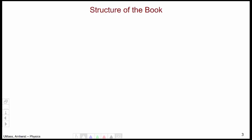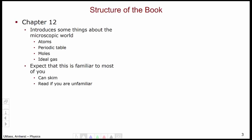So what is the structure of the book for this particular unit? The first chapter in this unit is chapter 12. Chapter 12 introduces some ideas about the microscopic world such as atoms, the periodic table, moles, the ideal gas that we expect is familiar to most of you. You can skim it but if you are unfamiliar with this material it is provided here for you.